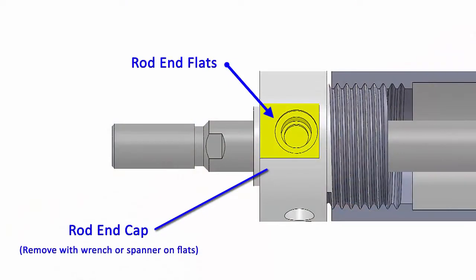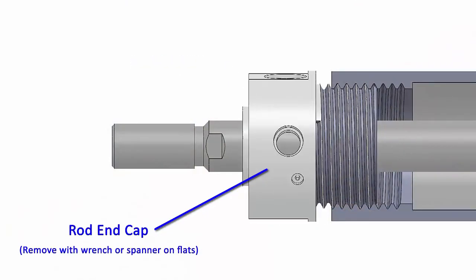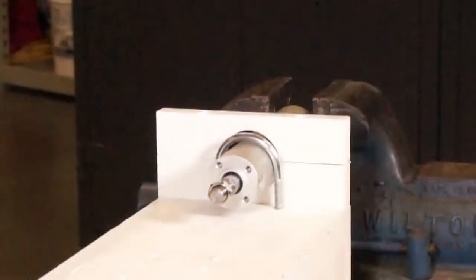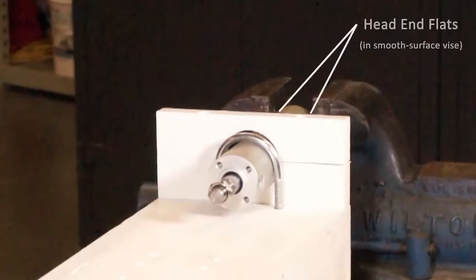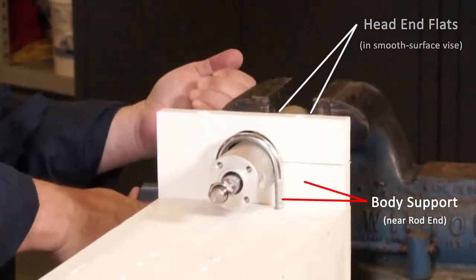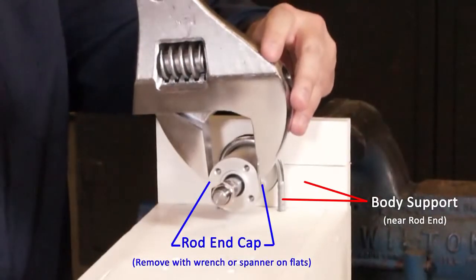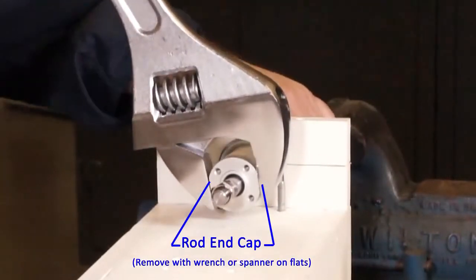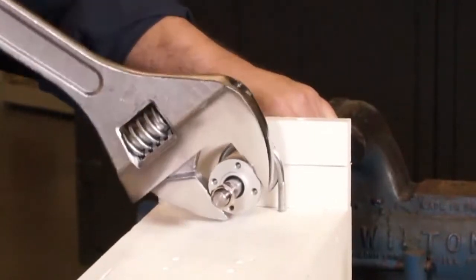The CG1 has a rod end cap threaded onto the body. So, to open the cylinder, hold the head end flats using a smooth surface vise and support the cylinder near the rod end so that it won't move. Use a spanner or adjustable wrench to turn the rod end using the flats.